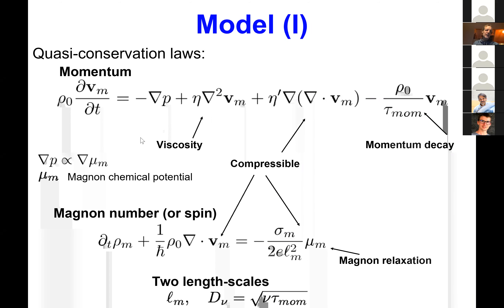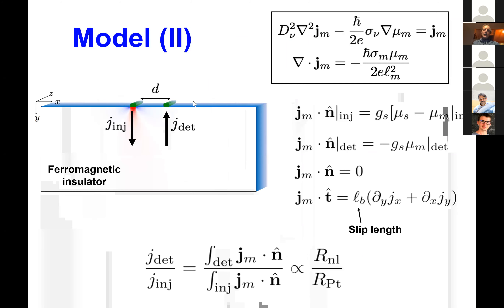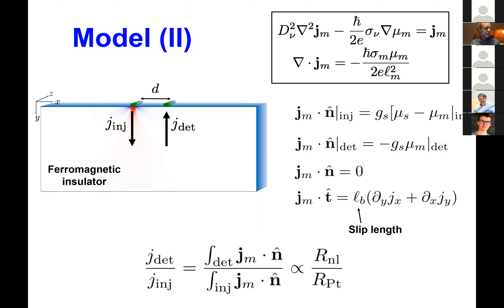Typically in experiment they can distinguish heat from spin transport in terms of excitation and detection. Let me now describe what we actually do: we solve the steady-state Navier-Stokes equation reformulated in terms of the spin current, and a spin quasi-continuity equation with a momentum-relaxing term.